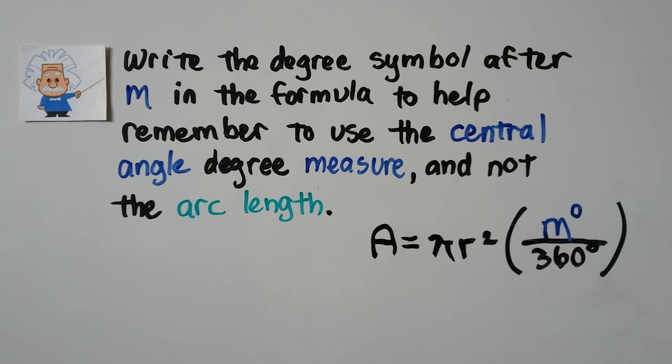Write the degree symbol after m in the formula to help remember to use the central angle degree measure and not the arc length. Just remember that this is a degree measure and a degree measure, okay?